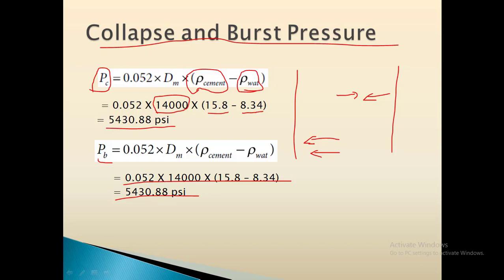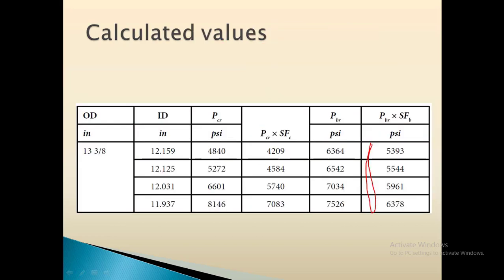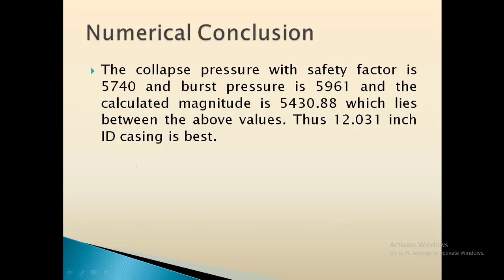Comparing the values: the required pressure of 5430.88 psi must be less than the casing's capacity with safety factor applied. The collapse pressure with safety factor for 12.031-inch ID is 5611.44 psi and burst pressure is 5767.97 psi — both exceed 5430.88 psi. Therefore, the 12.031-inch inner diameter casing is the best selection for this well.